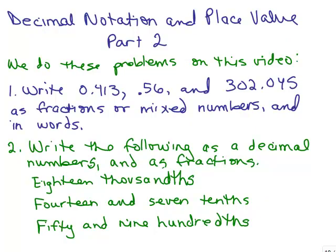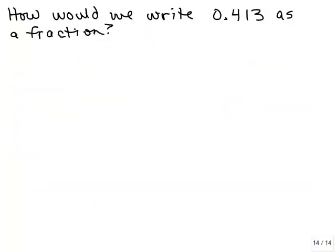This is part two of decimal notation and place value. How would we write 0.413 as a fraction? In other words, what does this mean? So there's more than one digit here. Let's start off by using the place value idea and writing the three fractions, each depending on where each digit is.